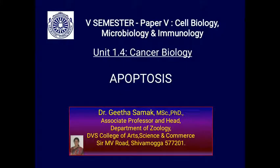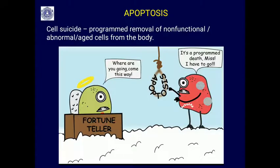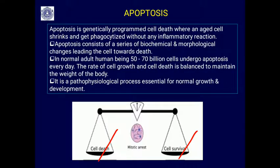Apoptosis is programmed cell death, also called cell suicide — the programmed removal of non-functional, abnormal, or aged cells from the body. As this cartoon illustrates, once an apoptotic signal is turned on in the cell, nobody can stop the cell from dying. Apoptosis is a genetically programmed cell death where an aged cell shrinks and gets phagocytosed without any inflammatory reaction.